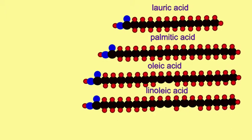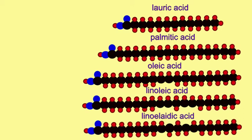One at position 9 and one at position 12, both in the cis formation. Linolenic acid possesses the same formula as linoleic acid, except its double bonds exist in the trans formation.